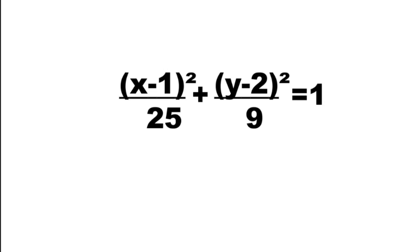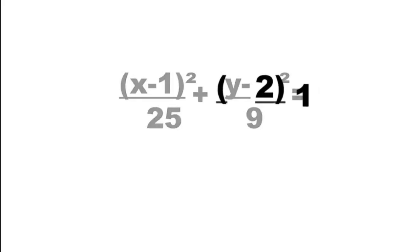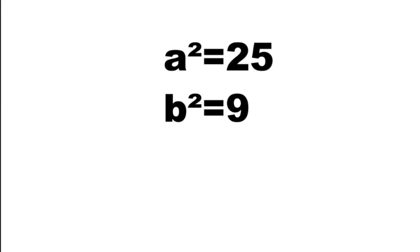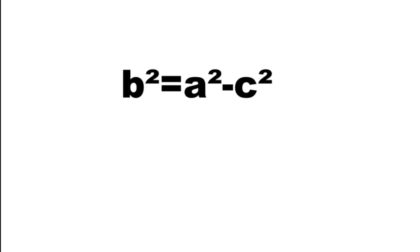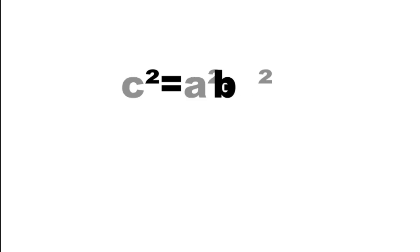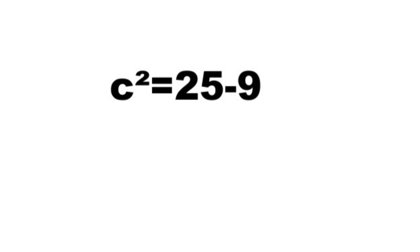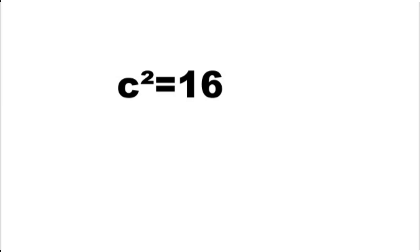Example: quantity (X minus 1) squared over 25, plus quantity (Y minus 2) squared over 9, equals 1. Since 25 is greater than 9 and 25 is the denominator of X, the major axis is parallel to the X axis with center at (1, 2). A squared equals 25 and B squared equals 9, so A equals plus or minus 5, and B equals plus or minus 3. Using the relation B squared equals A squared minus C squared, solving for C: C squared equals 25 minus 9 equals 16, so C equals plus or minus 4.